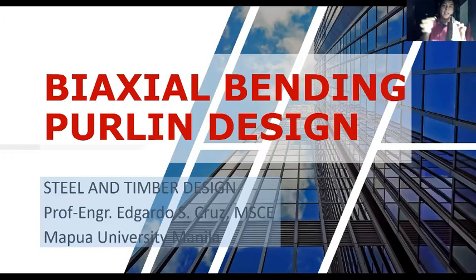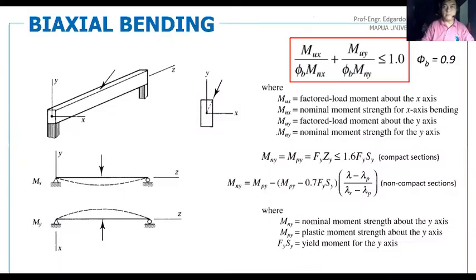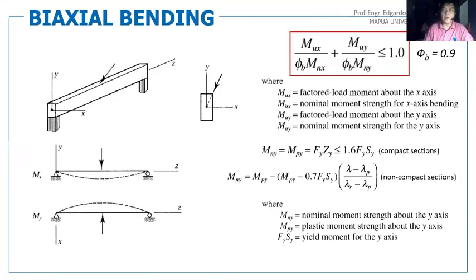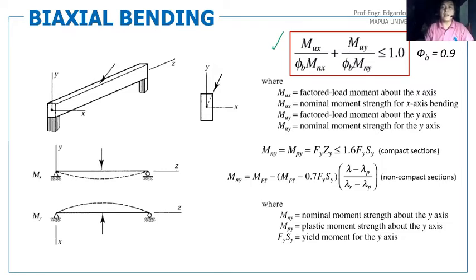For bi-axial bending, this is the interaction equation we need to satisfy: the first term is MUx divided by phi times MNx for bending about the major axis, plus the second term MUy divided by phi sub b times MNy for bending about the minor y-axis. The numerators MUx and MUy are the factored load moments about the x and y axes respectively, which can be calculated from the given factored loads — usually the maximum moment on the beam.